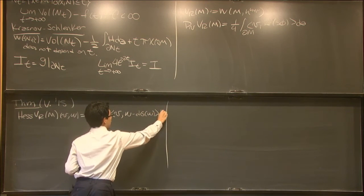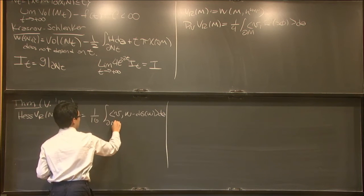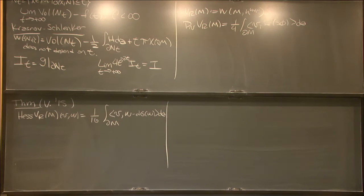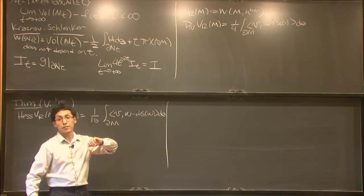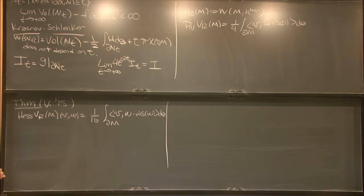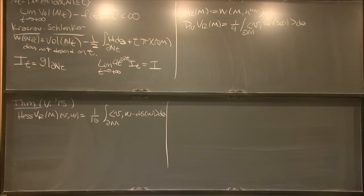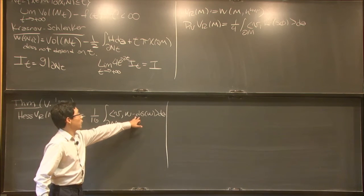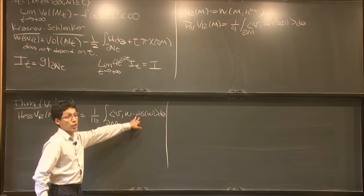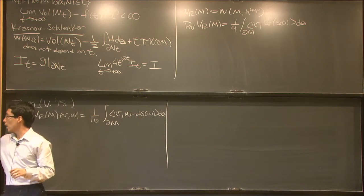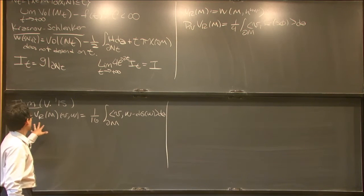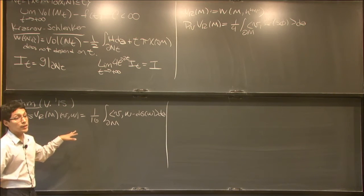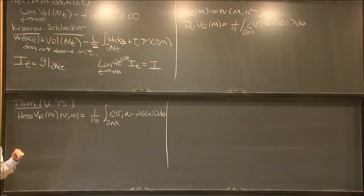Where again, V and W are going to be real parts of holomorphic differentials. And here, this sigma is the derivative of the skinning map. Again, I don't have enough time to tell you what's precisely the skinning map. But I will tell you that for this particular case, it was known that this quantity was a contraction in the particular case of the acylindrical case.